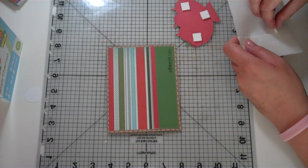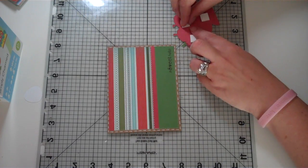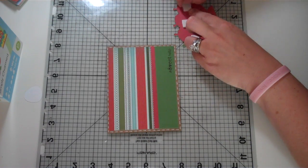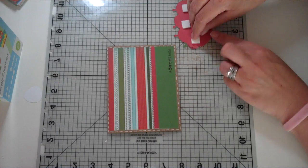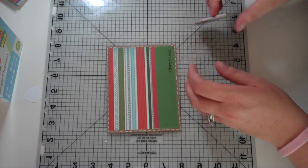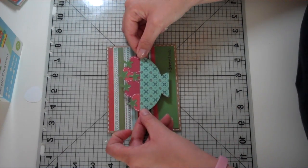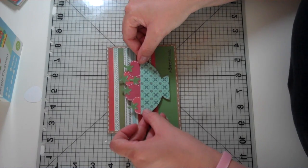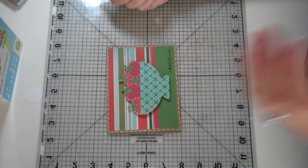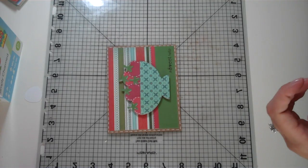And I'm going to pop this up on some foam squares. This Simply Charmed cartridge is so stinkin' cute. And I can't wait to really play with it. I kind of did this in a little different, but okay, so there's our little bowl of strawberries.